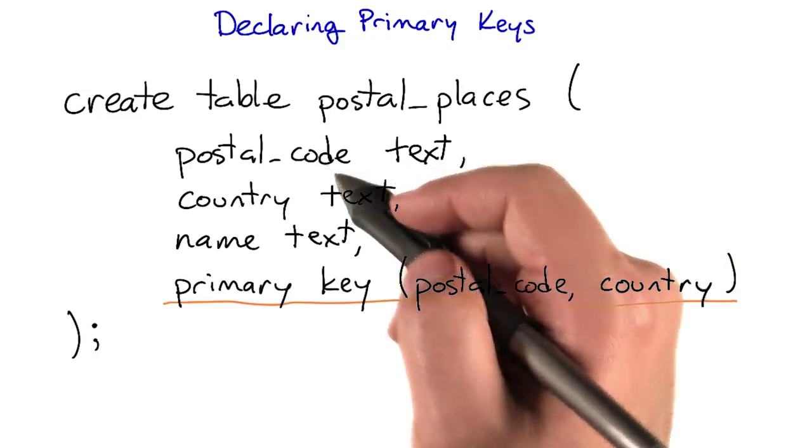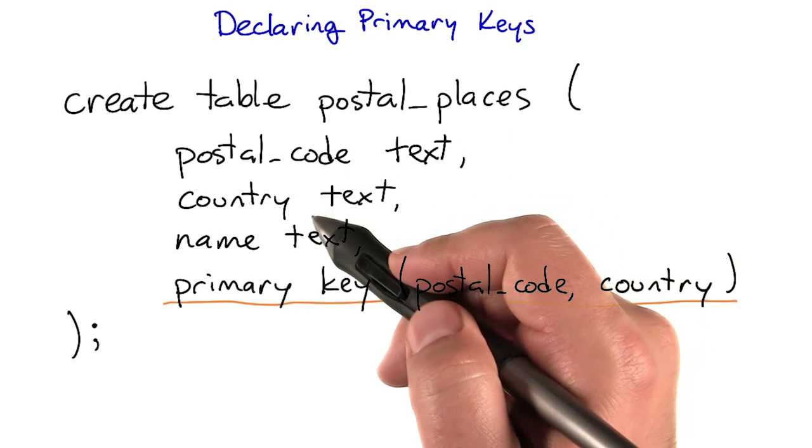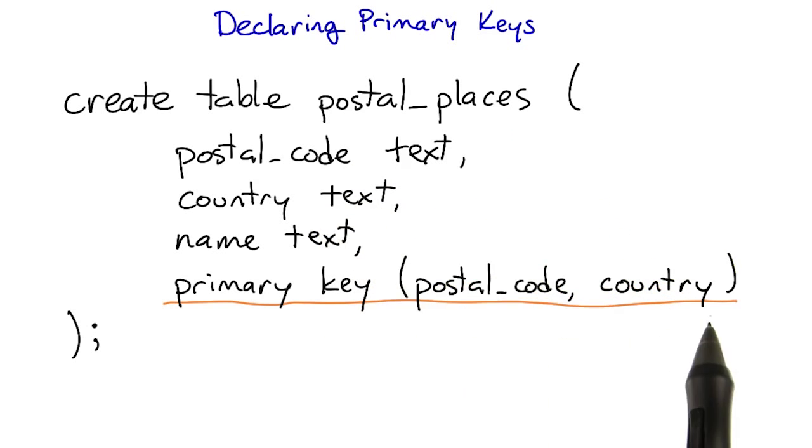For instance, postal codes don't have to be unique around the world, since two different countries could use similar numbering systems. The US, Germany, and Indonesia, among others, all use five digit postal codes. This means that if we wanted to have a table of places that we can mail packages to, we'd want to have both the postal code and the country as parts of the primary key.